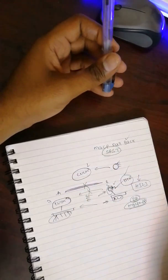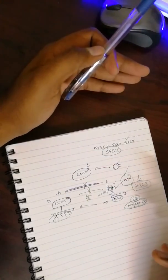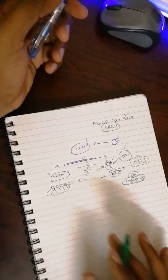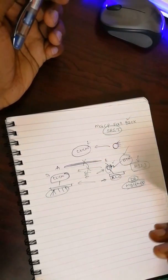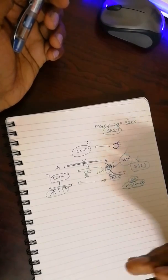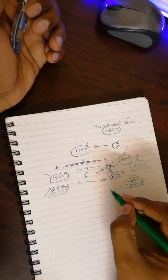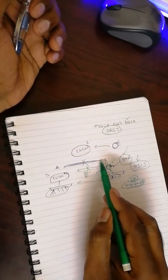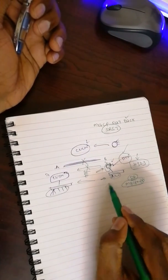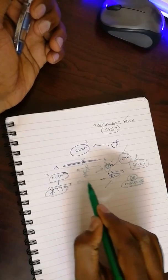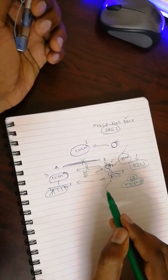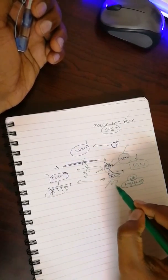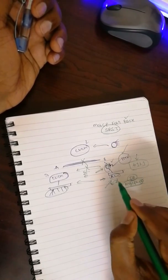This is what MGCP fallback is about. Now let us see SRST. SRST is a solution for what problem exactly we have. That is, whenever there is a WAN connectivity loss between Site A and Site B, all the phones in Site B have lost their connection to the CUCM server and they are not even having communication among themselves.